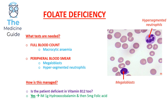Subacute combined degeneration of the spinal cord affects the dorsal columns, the lateral corticospinal tract, and the spinal cerebellar tract. The patient would present with bilateral spastic paresis, bilateral loss of proprioception and vibration, and bilateral limb ataxia.